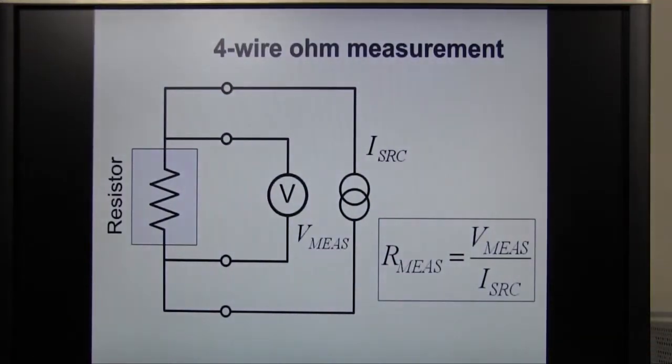This slide shows you how to measure a resistor by general 4-wire ohm measurement. Use a DC current source to force current and measure the voltage drop across the resistor by voltmeter. 4-wire measurement is a common method to eliminate the effect of lead resistance.